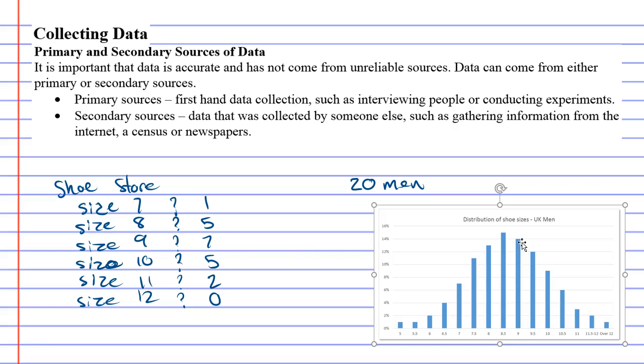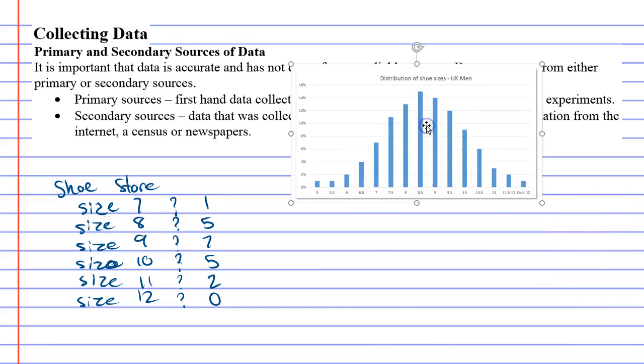The advantage to the graph, the secondary sources, is that it was easy, it was cheap, it was quick to do. But the disadvantage is that I actually really don't know where this information comes from and I don't know how true it is.